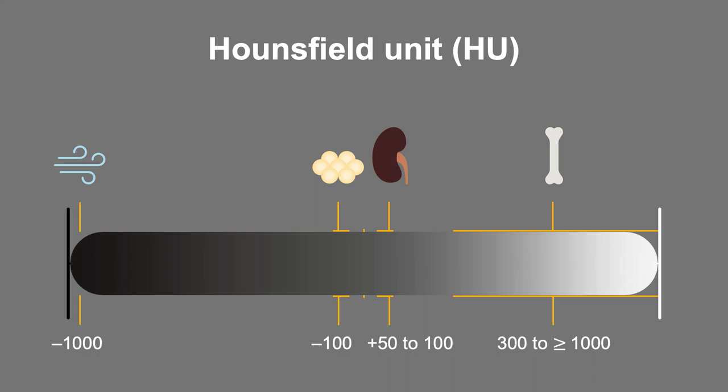By convention, water is 0 Hounsfield units, air is –1000, fat is around –100, soft tissue is about 50 to 100, and bone can range from 300 to more than 1000 depending upon how dense it is.